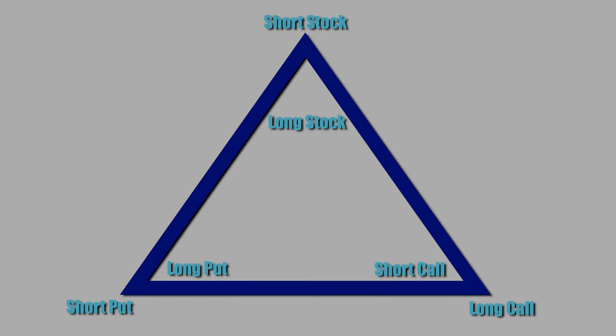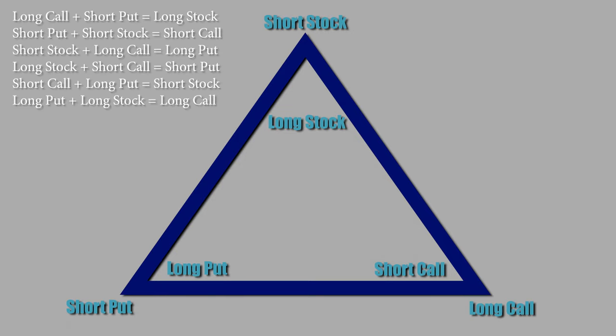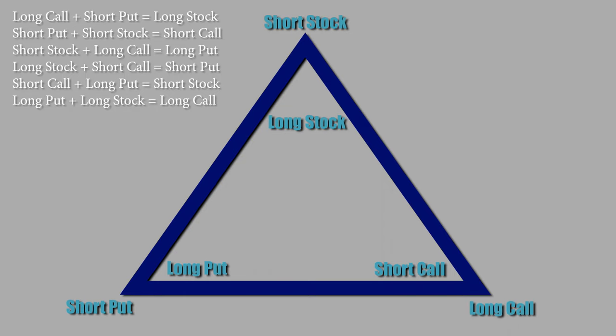So let's look at how these relationships work and what makes it all possible. I'm going to introduce something called the synthetic triangle. Here's how it works: any two outside positions equal the opposite inside position. For example, a long call plus a short put equals a long stock. The same is true for inside the triangle — combining any two inside positions equals the opposite outside position. For example, a short call plus a long put equals a short stock.